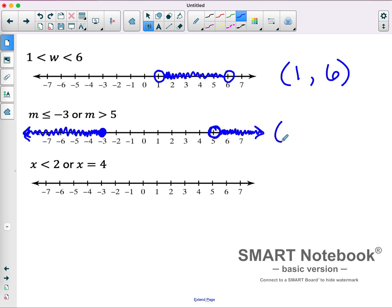This would be parentheses, negative infinity, all the way up to negative 3, with a bracket, union, and then parentheses 5 to infinity.